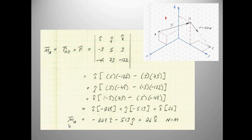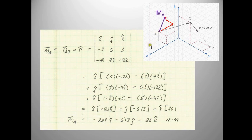You end up with a moment vector about point A that has a negative I component, a negative J component, and a positive Z component. Physically, if you put an axis through point A aligned along the vector defined by the moment about A, that is how this block would want to rotate. Take the fingers of your right hand, put your thumb along the vector Ma, and your fingers will curl in the direction that this vector is going to try to cause the block to rotate.